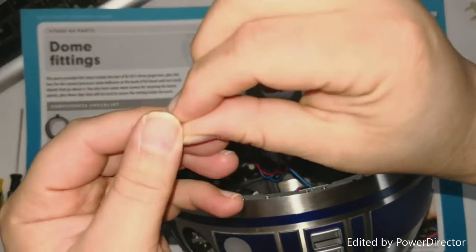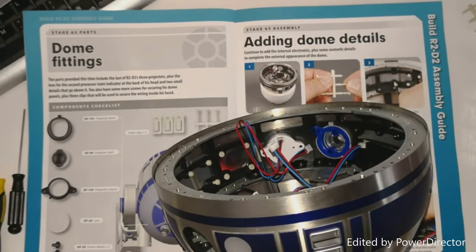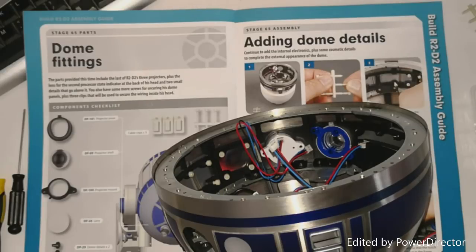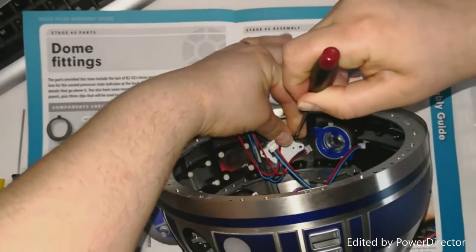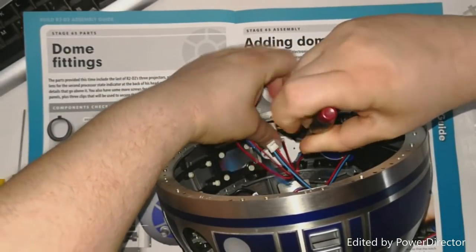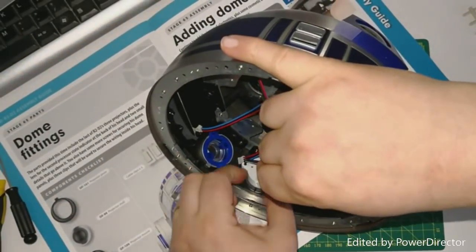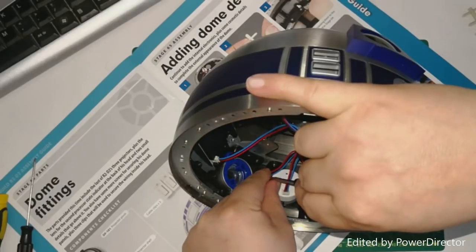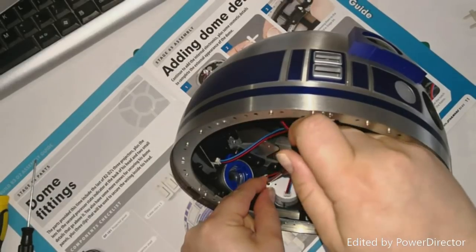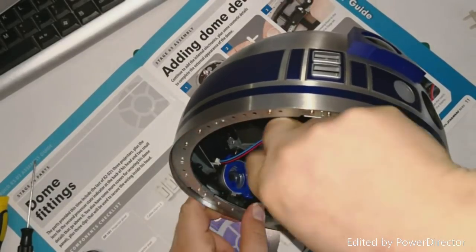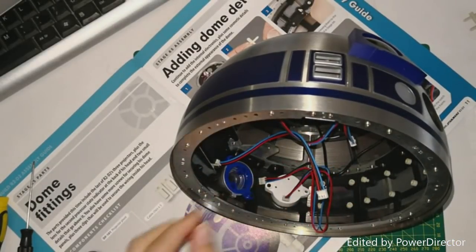Now what we need to do is grab the black screws that we got in the last issue. Need to grab our screwdriver. What we need to do is screw this down. Let's just turn this around, it gives us a bit more of an angle here. Just about lining up and screwing in, like so.